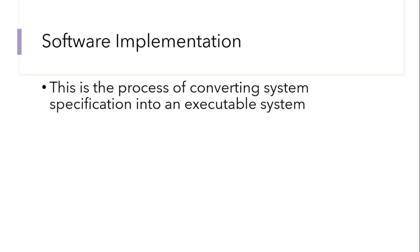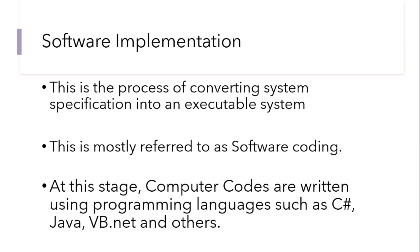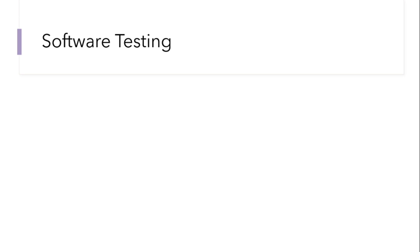Now let's look at software implementation. This is the process of converting system specification into an executable system, and it is mostly referred to as software coding. At this stage, computer codes are written using programming languages such as C#, Java, VB, and others. After gathering all requirements and completing the designs, this is where we convert the design into the actual software using programming languages.